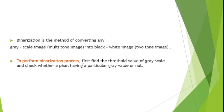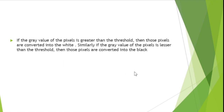To perform the Binarization process, first find the threshold value of the grayscale and check whether a pixel has a particular gray value or not. If the gray value of a pixel is greater than the threshold, then those pixels are converted into white. Similarly, if the gray value of a pixel is lesser than the threshold, then those pixels are converted into black.